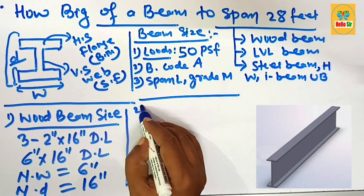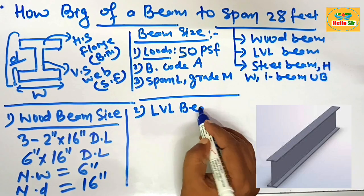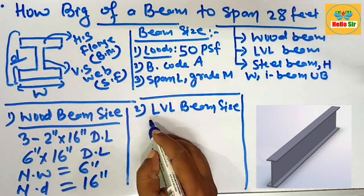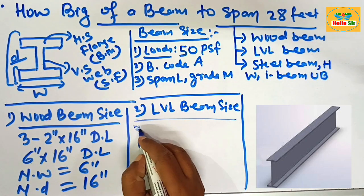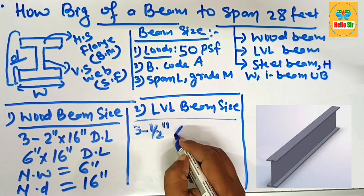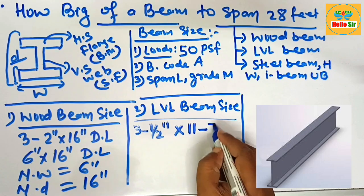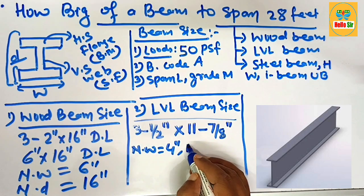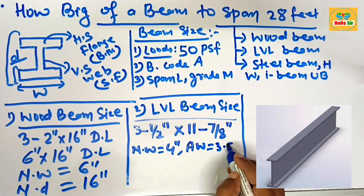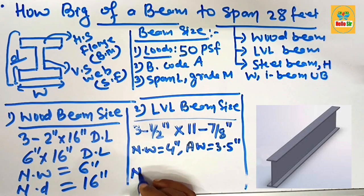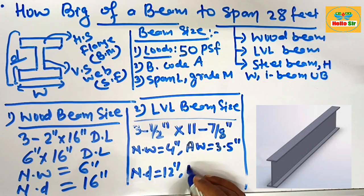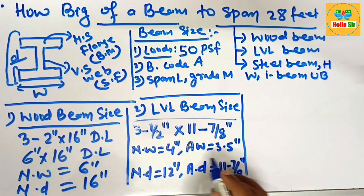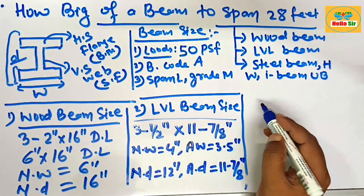The second beam: what size LVL beam is required to span 28 feet? The LVL beam size should be a double ply of 3 and a half inches width, with a depth of about 11 and 7/8 inches. The nominal width of the beam is about 12 inches and the actual depth of the beam is about 11 and 7/8 inches. This is the LVL beam size required to span 28 feet.